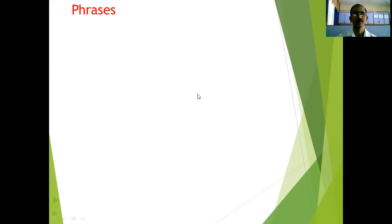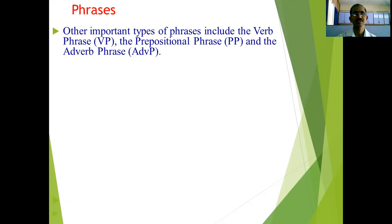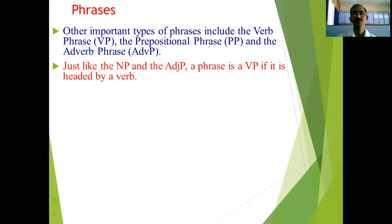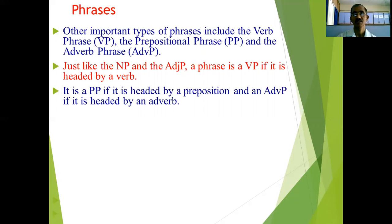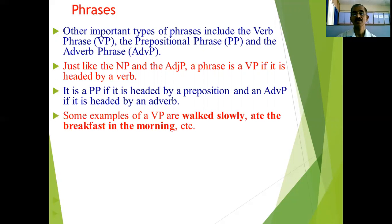Continuing from the last lecture, there are some other important types of phrases: the verb phrase (VP), preposition phrase (PP), and adverb phrase (ADVP). Just like the noun phrase uses NP and adjective phrase uses ADJP, a phrase is a verb phrase if it is headed by a verb, a preposition phrase if it is headed by a preposition, and an adverb phrase if it is headed by an adverb.